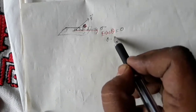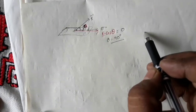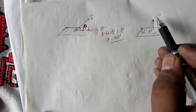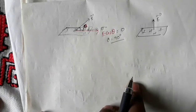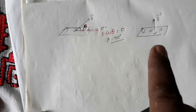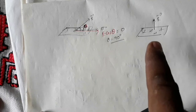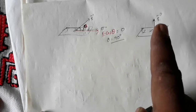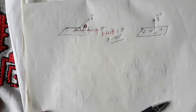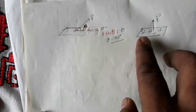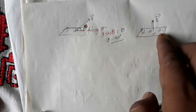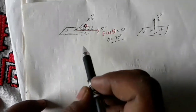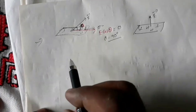Since there cannot be any component of electric field along the surface, E cos theta equals zero, which means cos theta equals zero, so theta equals 90 degrees. Therefore, for a charged conductor with surface charge density sigma, the electric field intensity is always perpendicular to the surface. We conclude that both electric field and electric field lines are always perpendicular to the surface of a charged conductor.